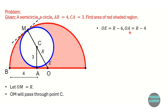Now, what is OA? The total length OB equals radius R, and the distance AB equals 4 units. This means OA equals R minus 4 units.